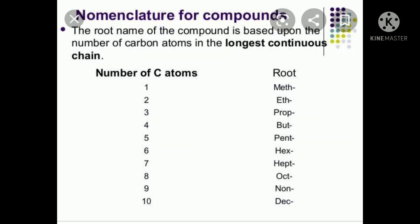In IUPAC nomenclature, a compound name has components: a root word, a prefix, and a suffix. The root word indicates the number of carbon atoms in the longest chain.